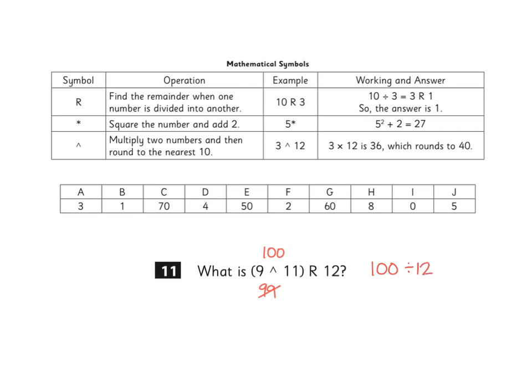The closest multiple of twelve to one hundred is eight times twelve, which is ninety-six. So that would mean a remainder of four. We can say then that one hundred divided by twelve is eight, with a remainder of four.